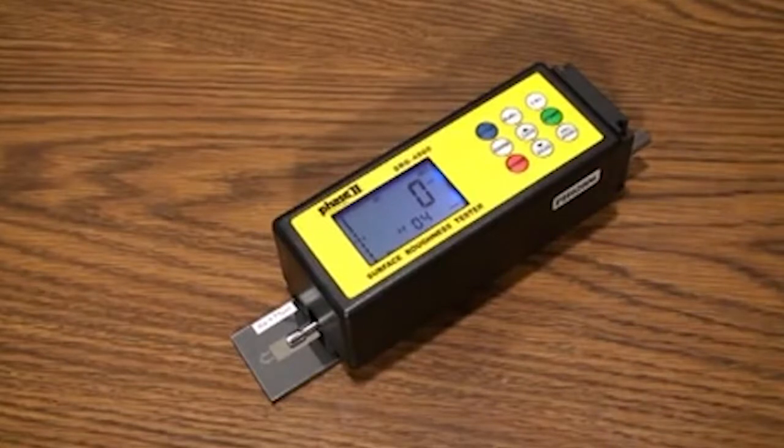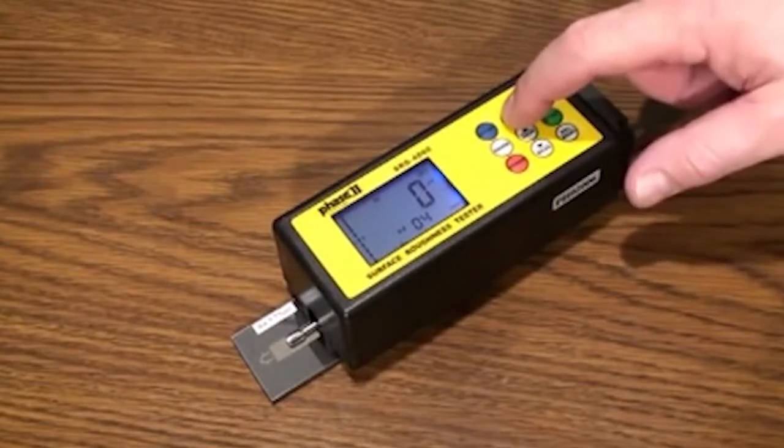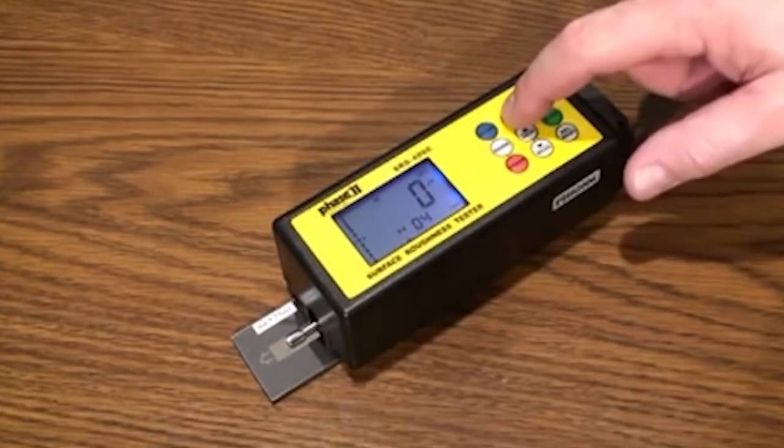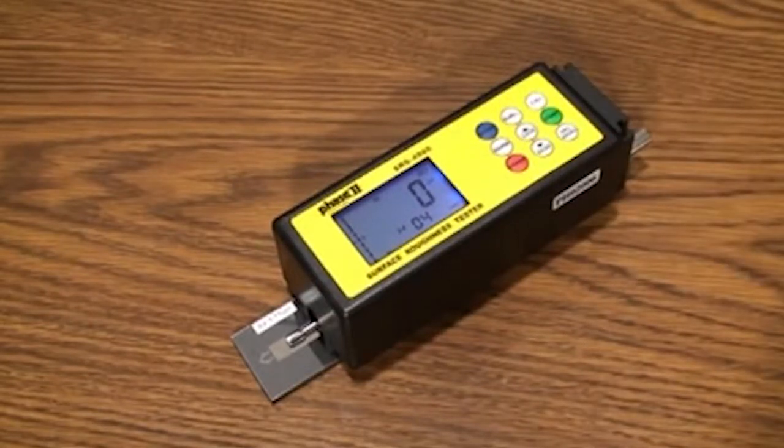This model will also read in RZ, RQ, which is RMS, and also RT. Pressing the RA, RZ button will allow you to scroll through the different parameters.